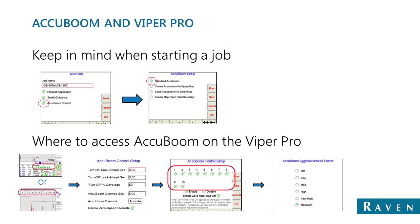For guys running AccuBoom with the Viper Pro console, setup has a few more steps. From the menu, go to Start Job, New Job. Make sure AccuBoom control has a green check if you're going to use AccuBoom. Ensure Standard AccuBoom is checked, and if you want advanced features, put the appropriate check mark before advancing. Depending on the Viper Pro software version, AccuBoom settings are accessed differently — older versions had boom icons on the bottom, newer versions have it on the top of the run screen. Selecting boom section settings takes you to the AccuBoom control setup for all your tuning.